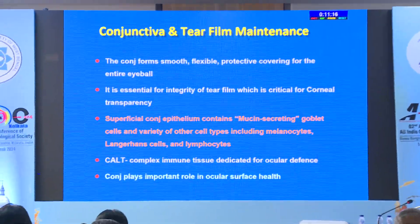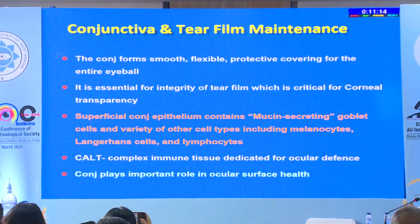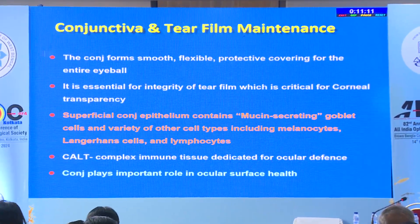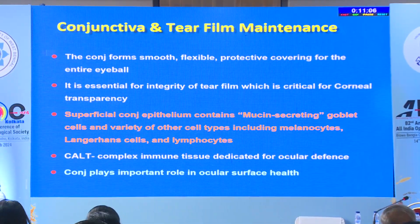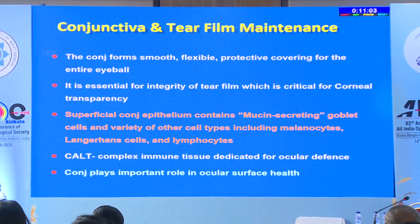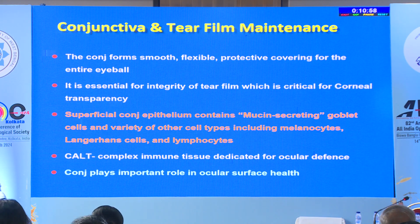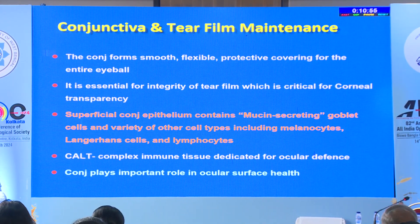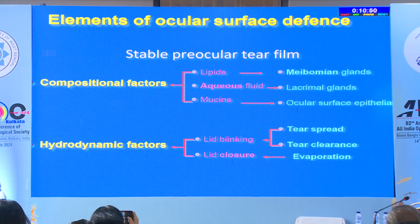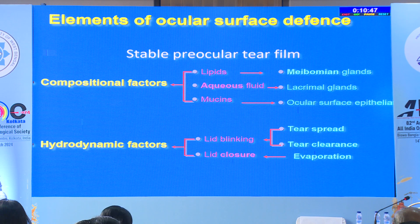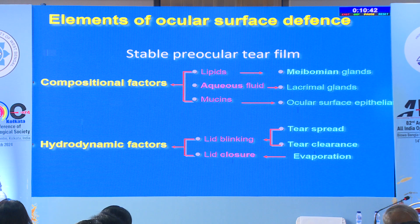The conjunctiva, which forms a smooth, flexible covering, is essential for the integrity of the tear film and corneal transparency. The conjunctiva-associated lymphoid tissue plays a very important role in maintaining moistness. The epithelia is needed to maintain the tear film, and the tear film is needed to maintain the corneal epithelium. When examining patients with dry eye, assess both compositional factors and hydrodynamic factors.